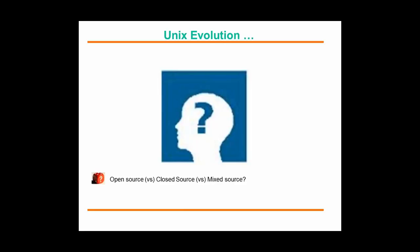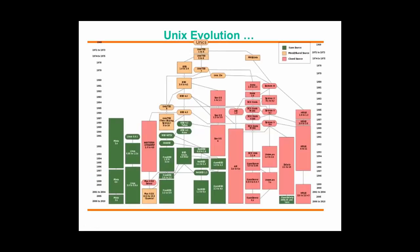There is no complicated logic behind the three. Open source means the source code is open — you can take it, compile it, add your own features, recompile it, and distribute it freely. Closed source means the source code is not available; for example, with AIX, if you want to add a new feature, you have to depend on the IBM developers. Then there is mixed source.